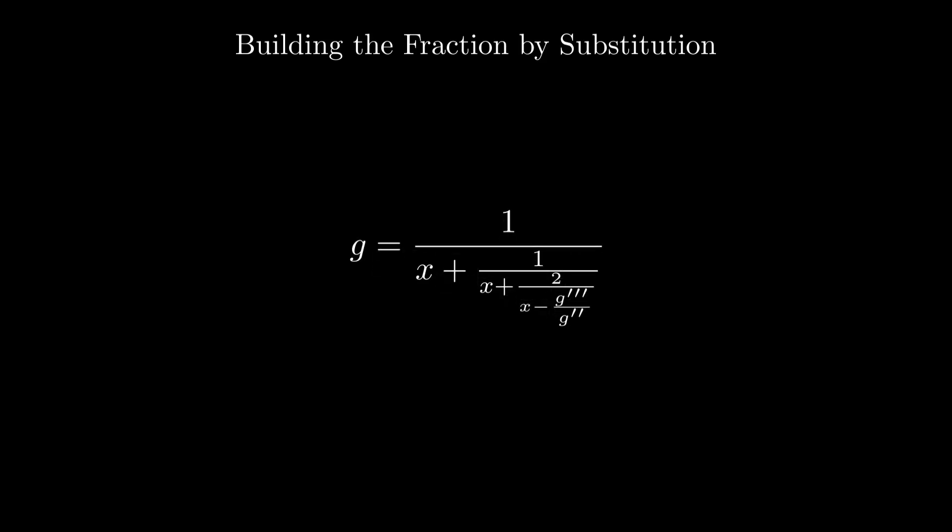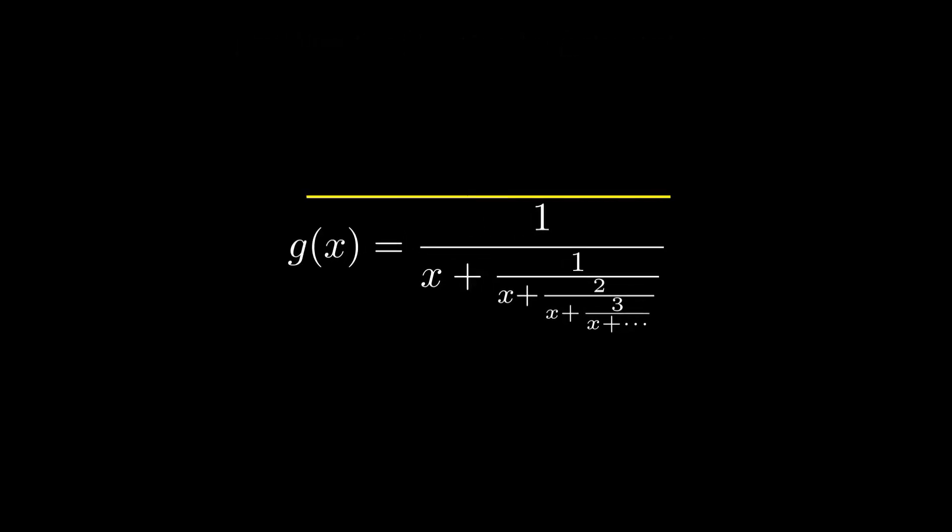Continuing this substitution infinitely gives us the final form: g(x) equals 1 over x plus 1 over x plus 2 over x plus 3 over x, and so on. This continued fraction matches the red portion of the Gaussian integral.